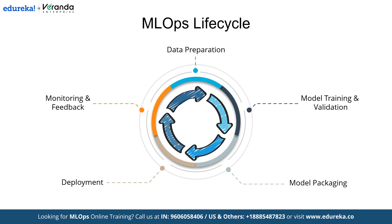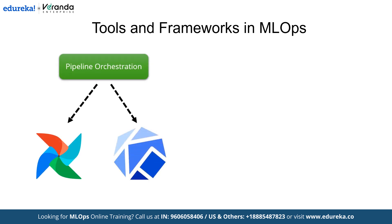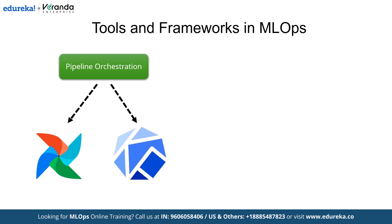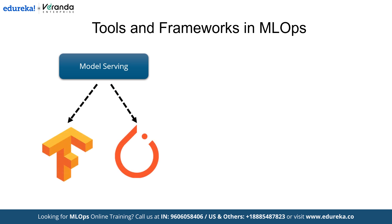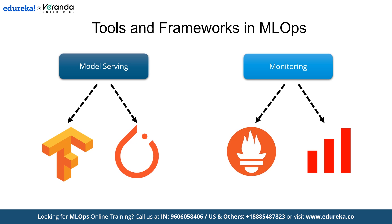Now that we know the core aspects of MLOps, let's discuss the tools and frameworks needed to build a career in MLOps. For pipeline orchestration, tools like Kubeflow and Apache Airflow help automate and streamline end-to-end ML workflows. For CI/CD, platforms such as Jenkins and GitHub Actions enable automated testing, integration, and deployment pipelines to ensure smooth transitions from development to production. For model serving, frameworks like TensorFlow Serving and TorchServe provide robust solutions for deploying and serving ML models at scale. For monitoring, tools like Evidently AI and Prometheus are commonly used to track performance metrics, detect data drift, and ensure that deployed models maintain their accuracy and reliability in production environments.